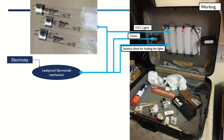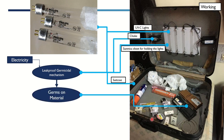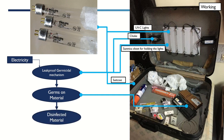These are the chokes required to run the lights. I've used a Sun Mica or small plastic sheet to hold them, secured with plastic ties. You can use any old suitcase — it doesn't have to be hard, it just needs to contain the light inside. All the materials you think may have germs on them go inside this cavity, then you close it and start it, and the system gives you disinfected material — that is our basic purpose.